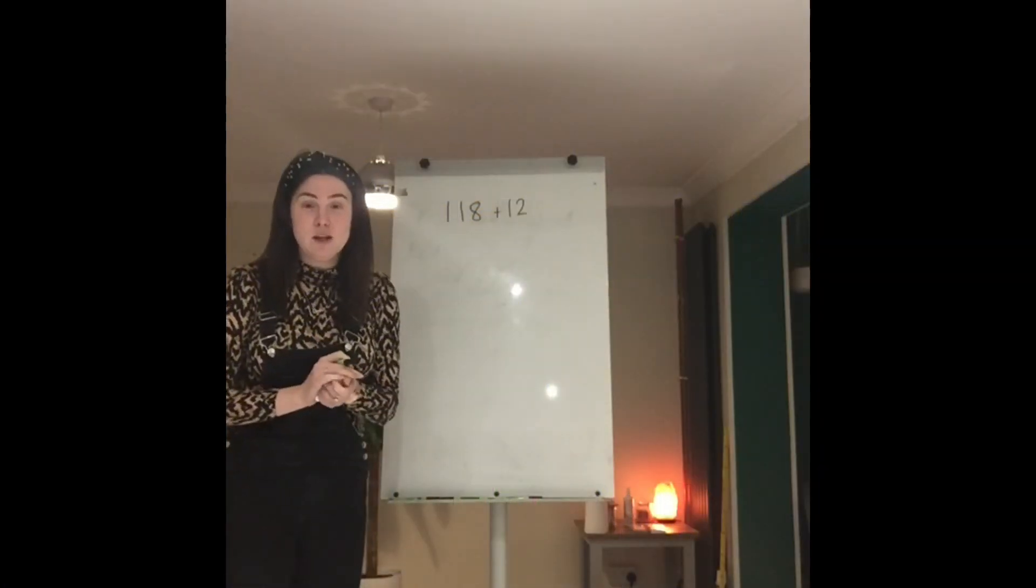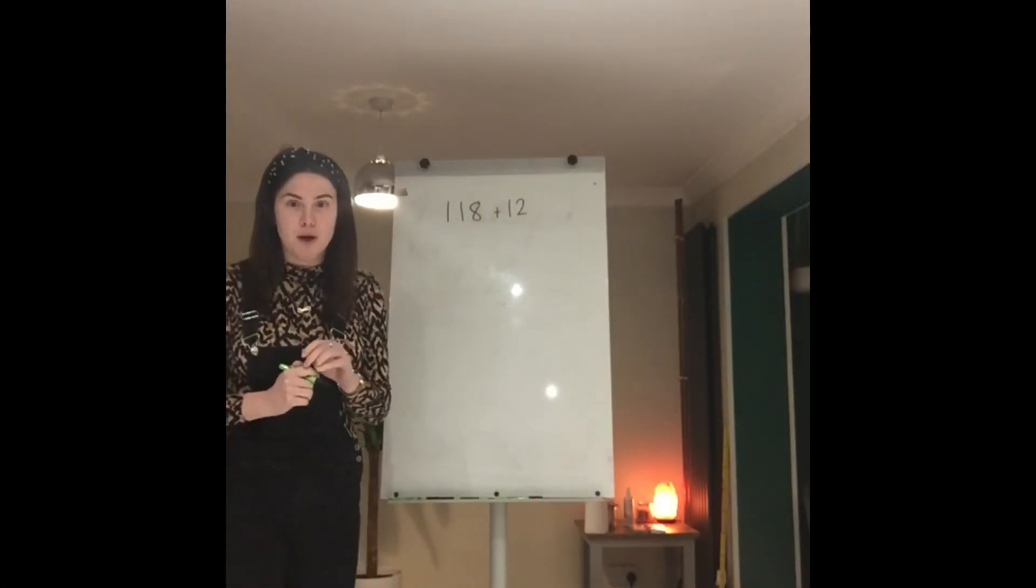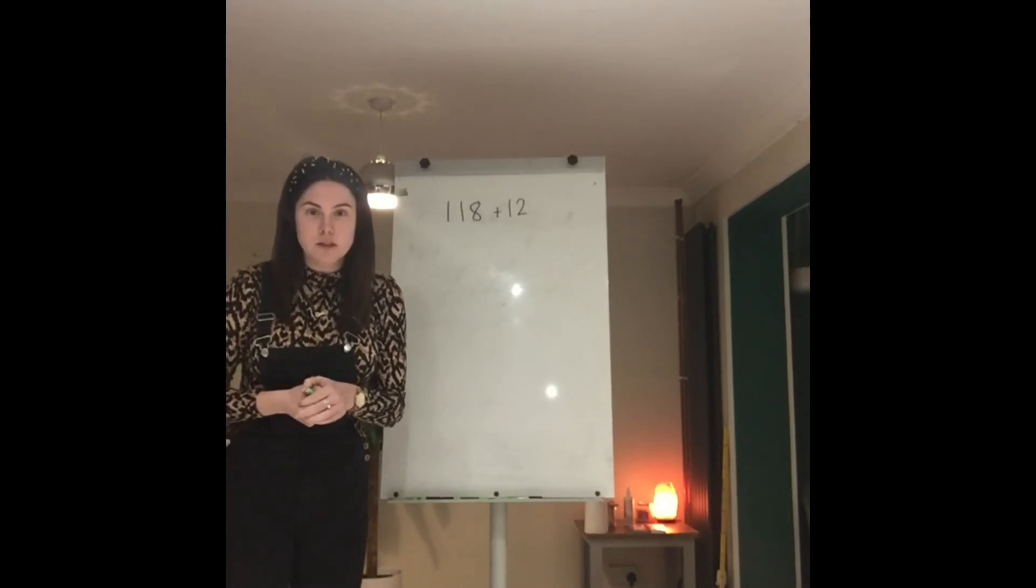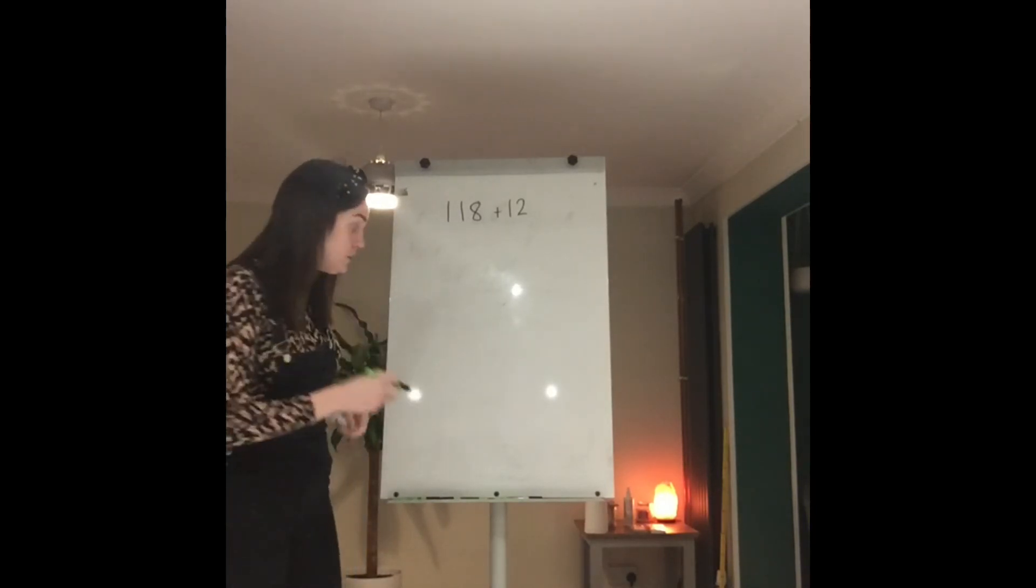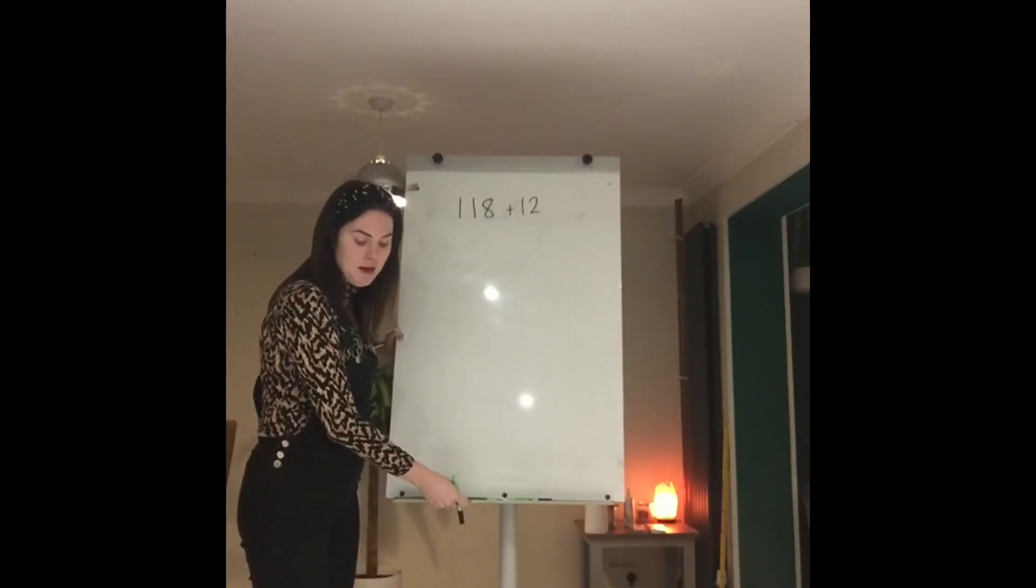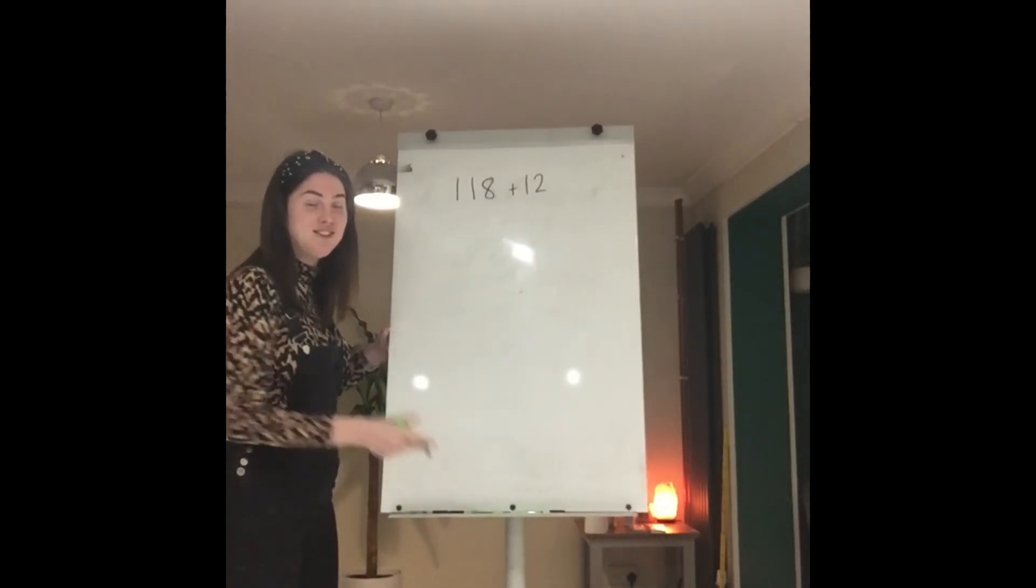Hi everyone, our first example today is number two from mild. We're going to do a few examples today because we're now moving on to three digit numbers and crossing. We're starting with 118 plus 12.